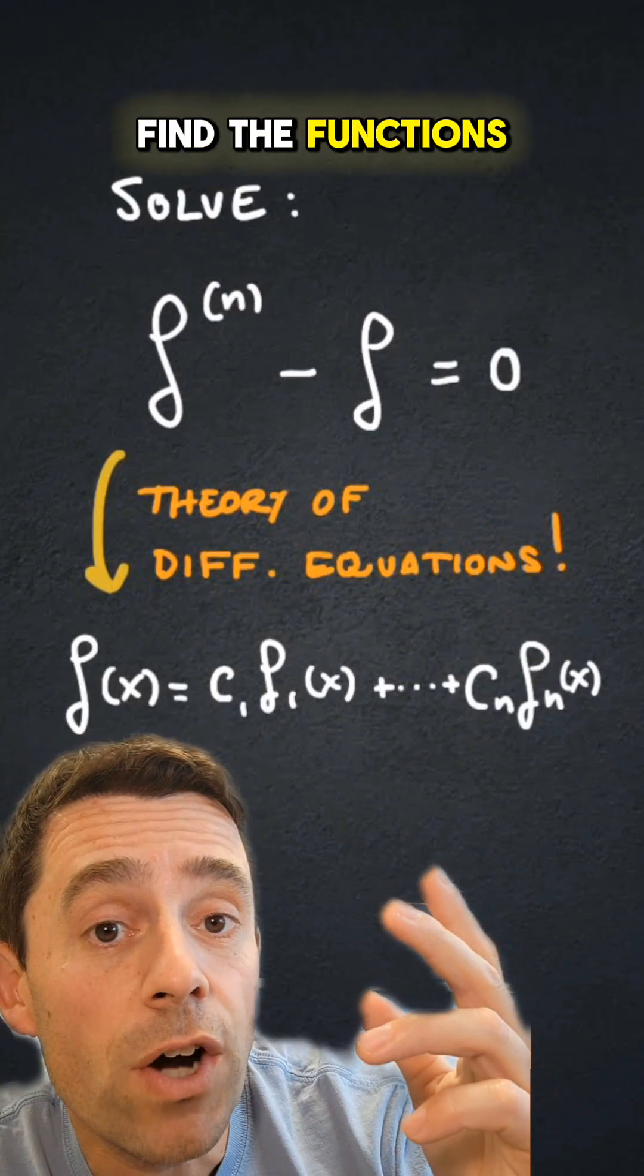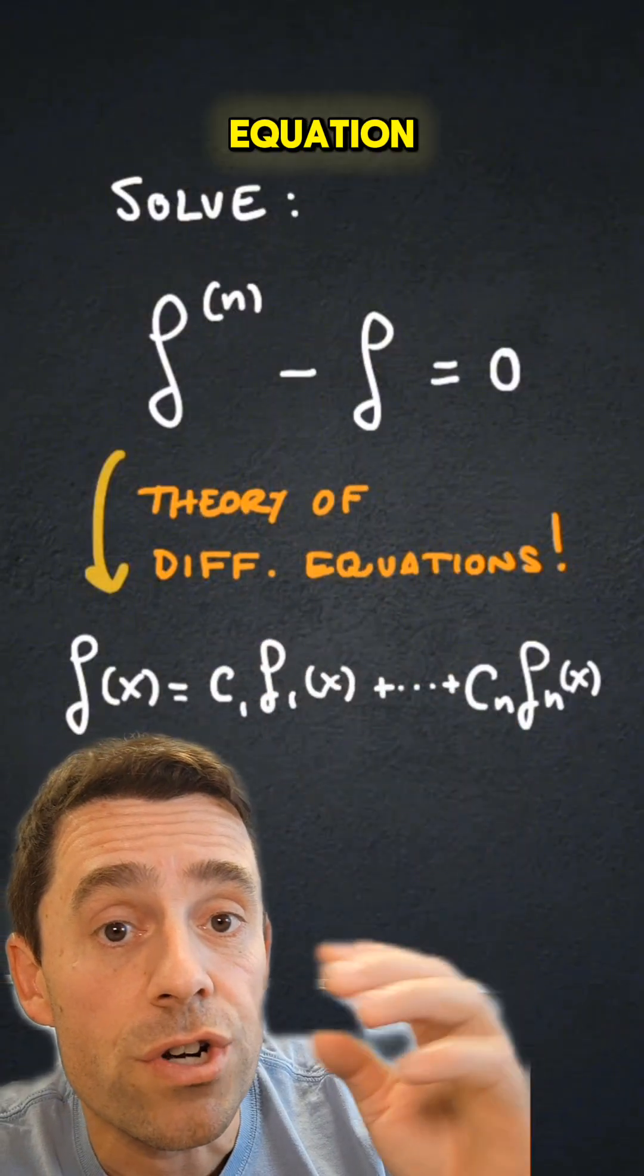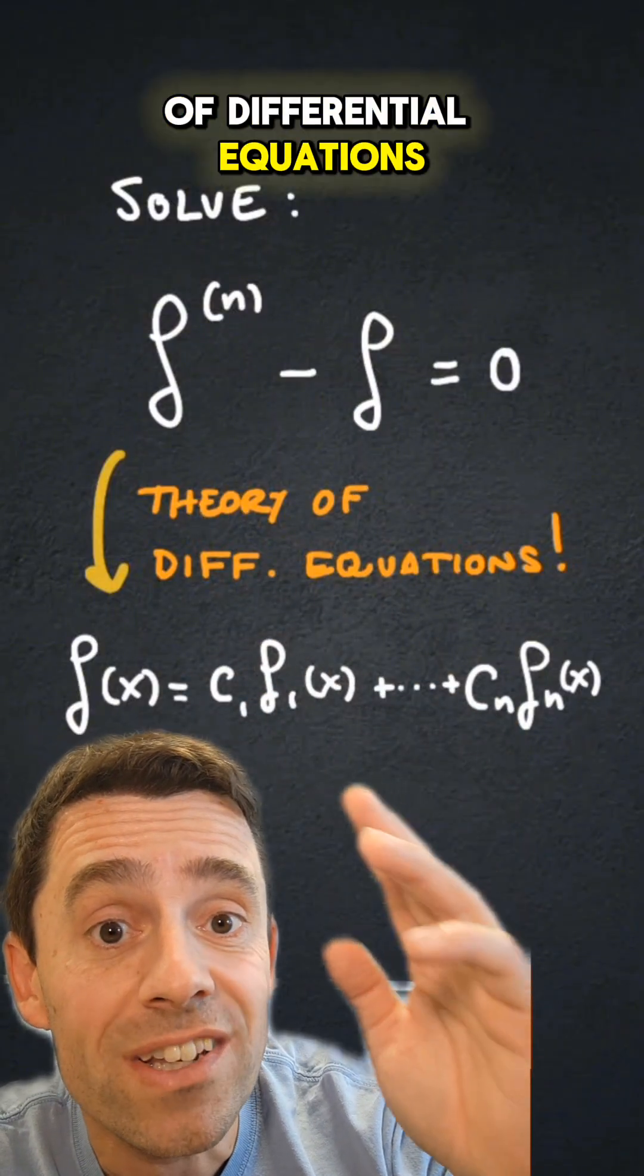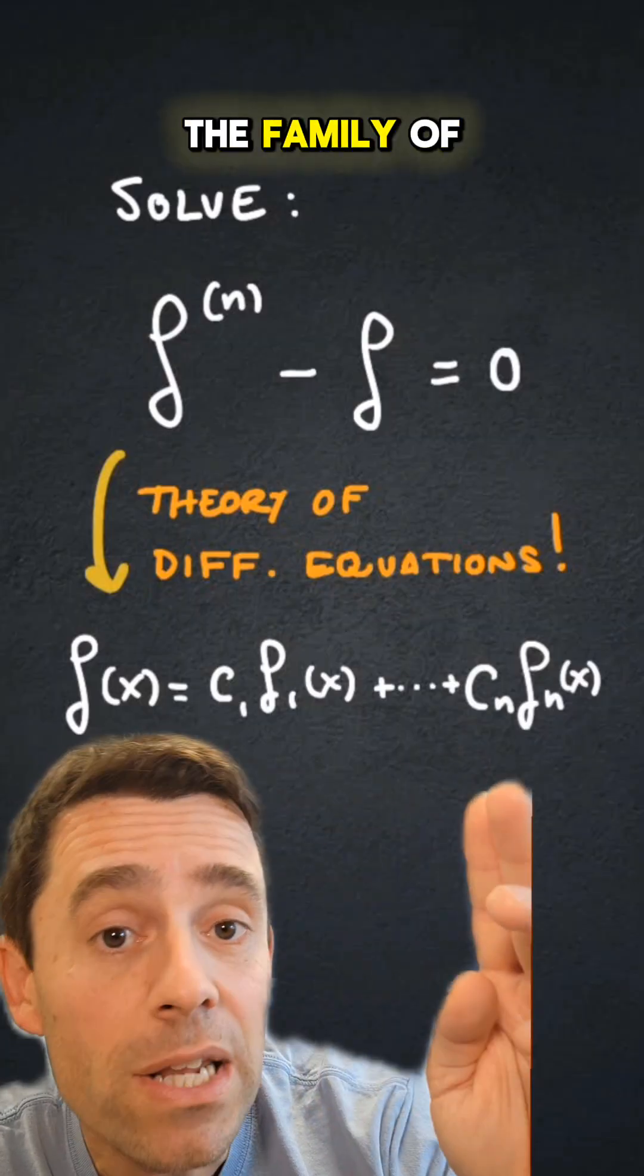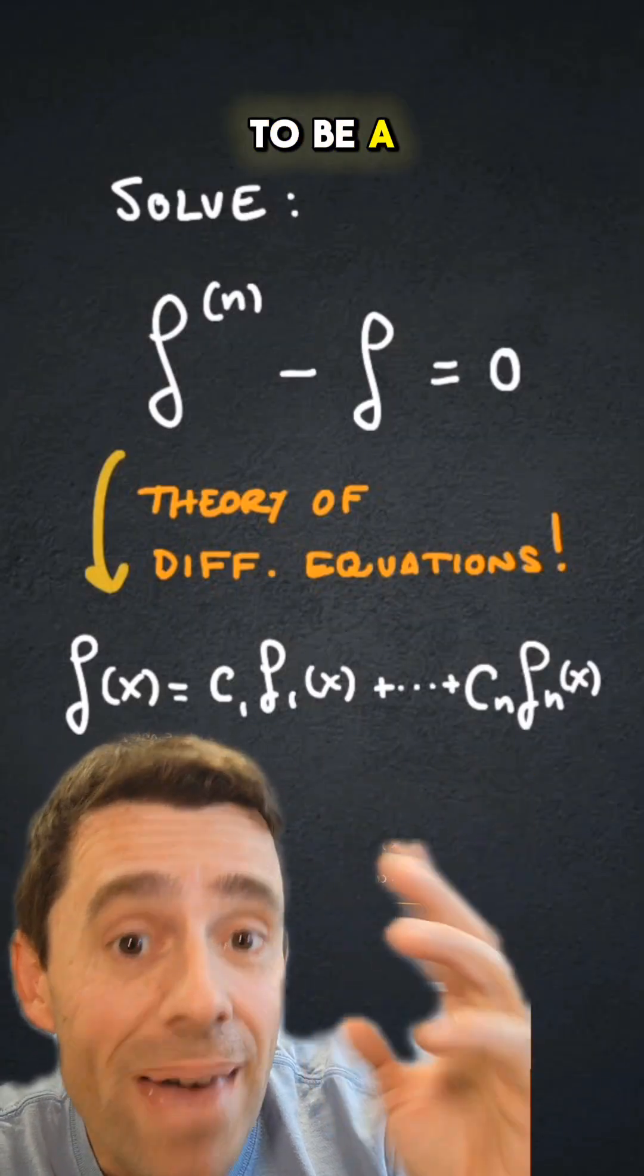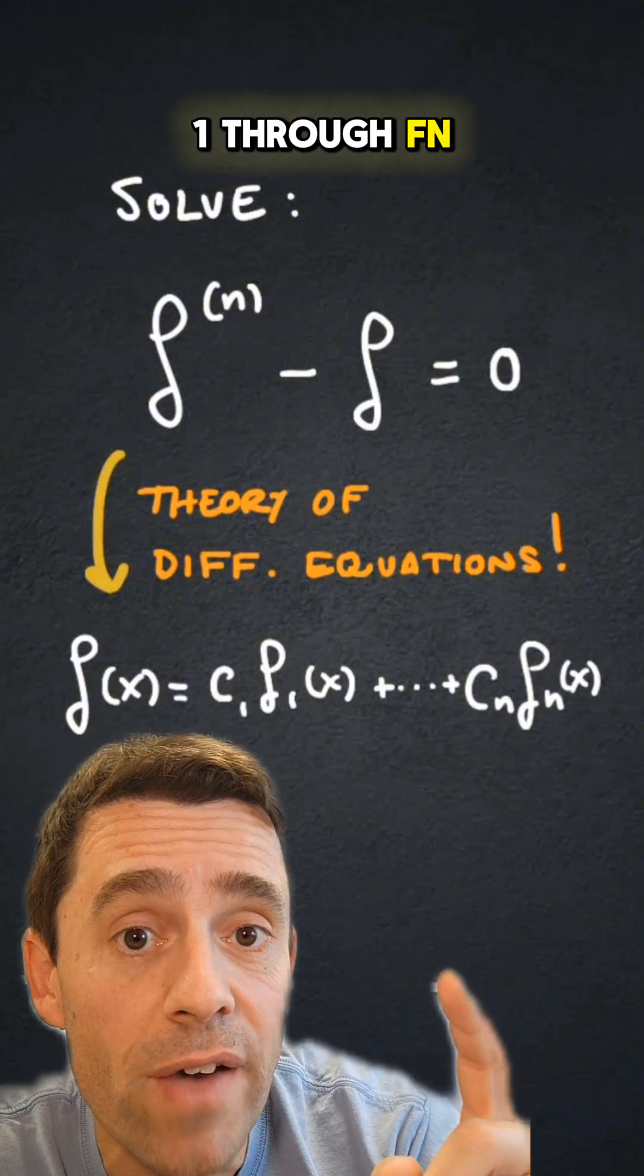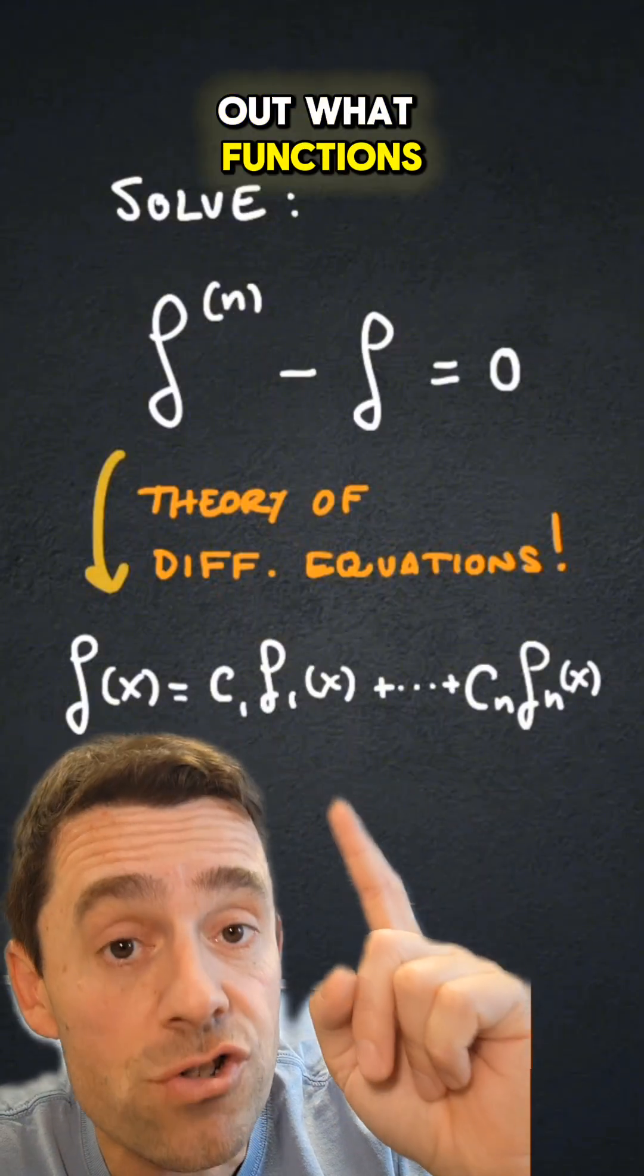In order to find the functions whose nth derivative is equal to itself, we need to solve this differential equation. The theory of differential equations tells me that the family of solutions is going to be n-dimensional. So there's going to be a basis of solutions given by some functions f1 through fn. Let's figure out what functions are those.